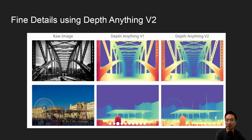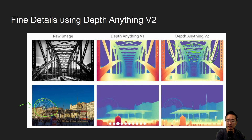For fine details, the first row shows a bridge where Depth Anything V2 captures a lot of the structural truss members that are largely lost in V1. The second row shows a cartwheel with many fine details visible. In the buildings, many structural beams are shown with much more detail in V2 as well.